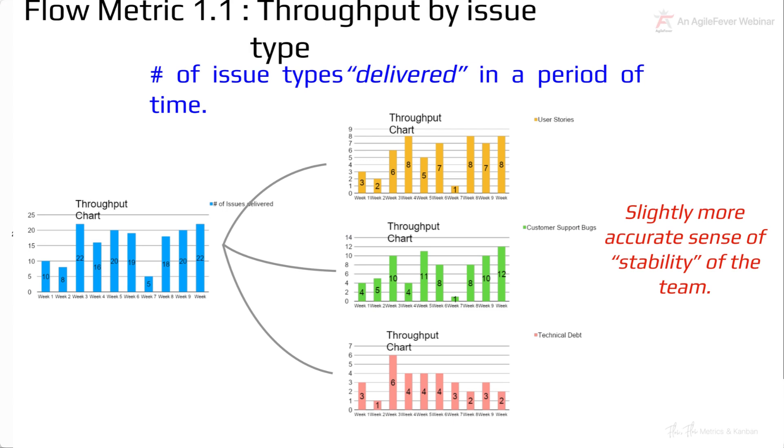We break down this chart into something more appropriate, which is now we are looking at throughput by issue type. So, you break down that chart into the different types of issues that were resolved. Now we get down to user stories, customer support bugs and technical debt.